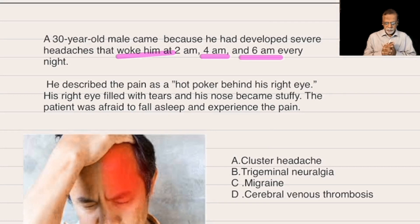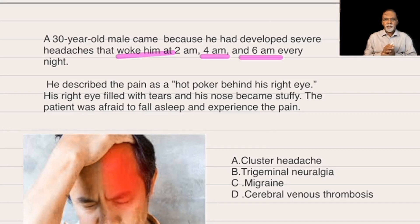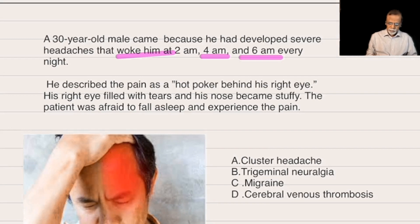The options are: (1) cluster headache, (2) trigeminal neuralgia, (3) migraine, (4) cerebral venous thrombosis. The correct answer is cluster headache.